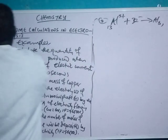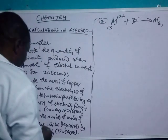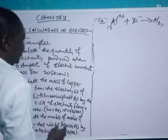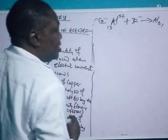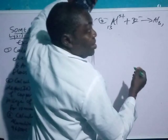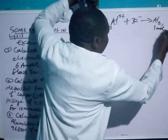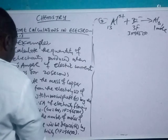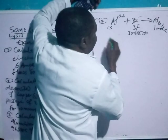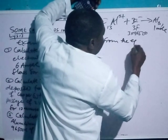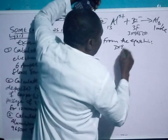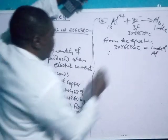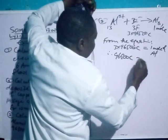Al³⁺ accepts 3 electrons from the solution to become Al(solid). Note that the atomic mass of aluminium is 27, but they are not asking for the mass — they want the number of moles. So we don't need the atomic mass. From the equation: 3 Faradays, which is 3 × 96,500 Coulombs, gives you 1 mole. The quantity given is 96,500 Coulombs. From the equation: 3 × 96,500 Coulombs → 1 mole of aluminium. Therefore 96,500 Coulombs → x.